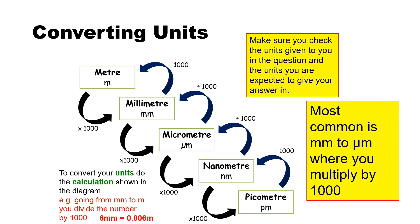Right, so converting units. A lot of the time you need to check the units you're given in the question and then the units you expect to give your answer in. So to convert your units, do the calculation shown in the diagram. For example, if you're going from millimeters to meters, you divide the number by a thousand. So six millimeters equals 0.06 meters. But the most common thing you'd be asked is to convert millimeters into micrometers, and the way that you do that is to times your answer by 1000. They could also ask you about nanometers and even picometers.